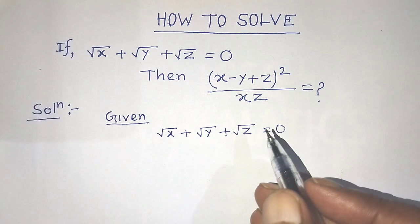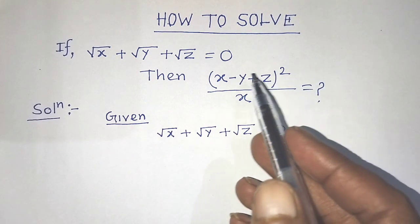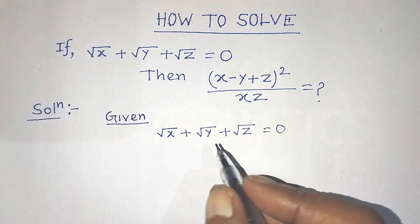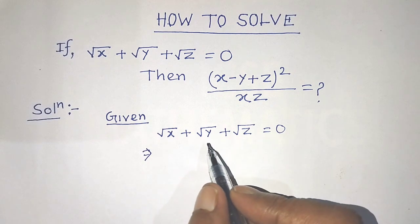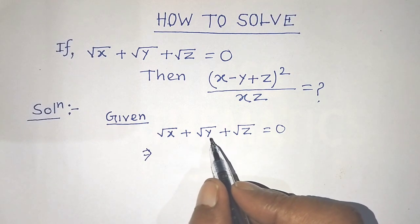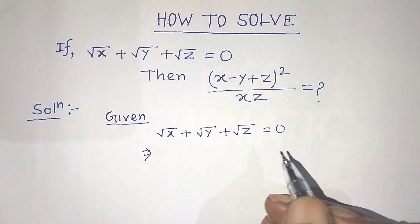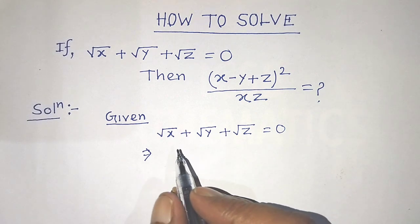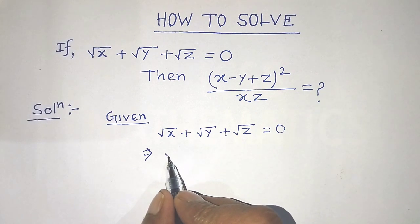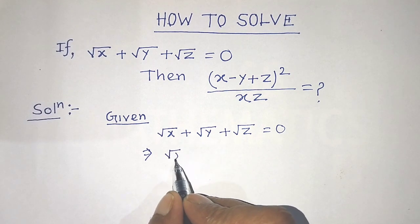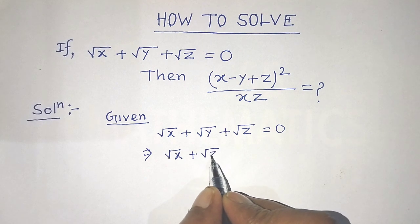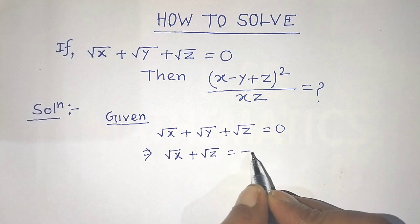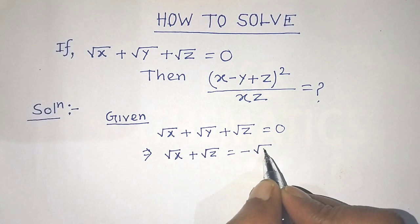To find the value of this algebraic expression from this equation, first of all we have to transpose plus root of y from the left hand side to the right hand side. So on the left hand side, we can write root of x plus root of z is equal to minus root of y.